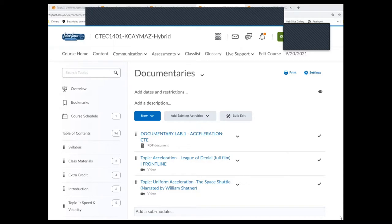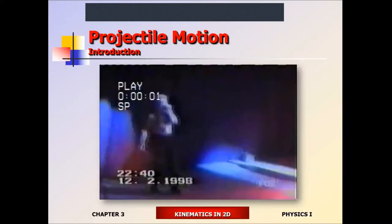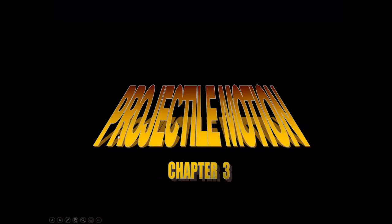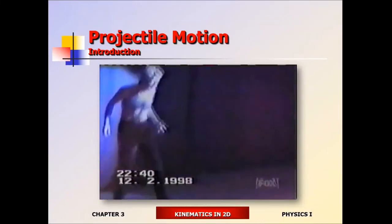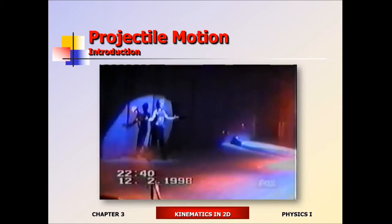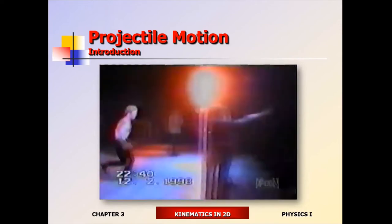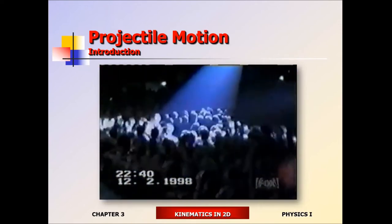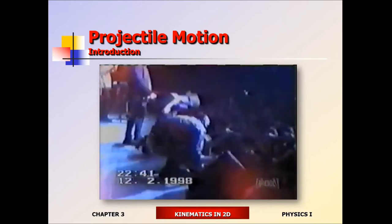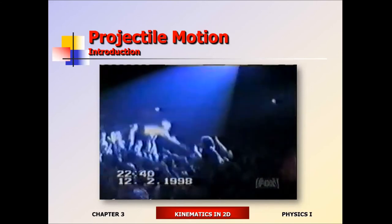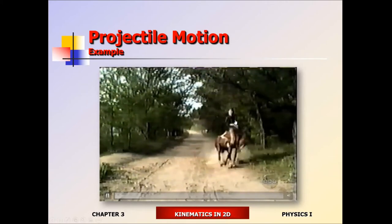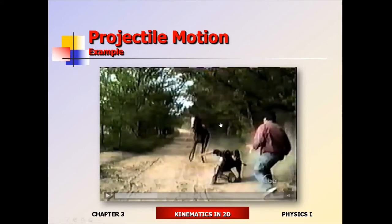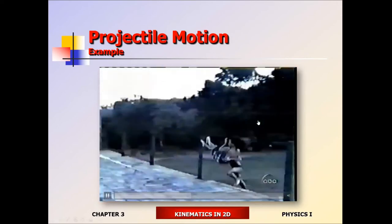Alright, so — projectile motion. Good times and concerts are synonymous, but for this DJ his good times came to an end from what we hope will be his last stage dive. The object here is to run, dive, and be caught by the concert-goers. Well, he ran, he dove, but no one got around to catching him. Fortunately he lost only consciousness; the rest of him remained relatively intact. This is an example of projectile motion — to be precise, sideways projectile motion.